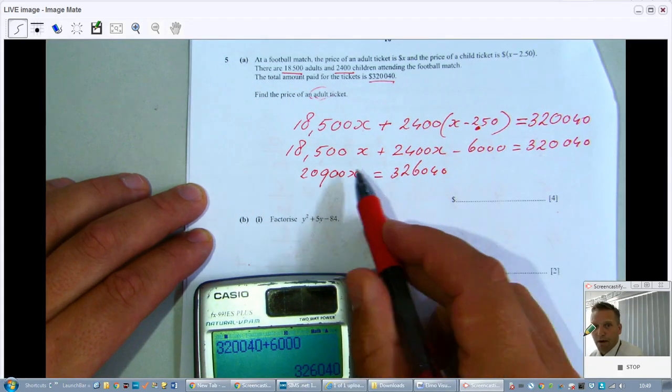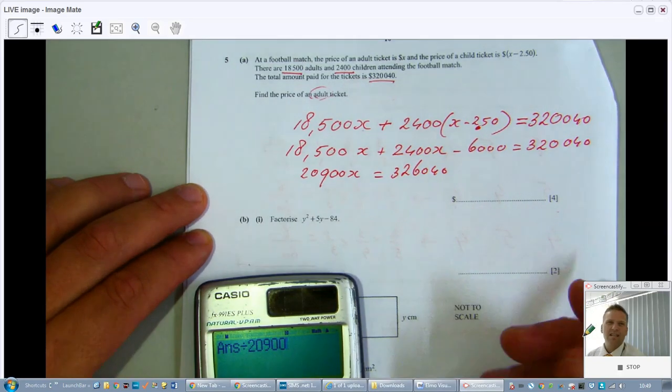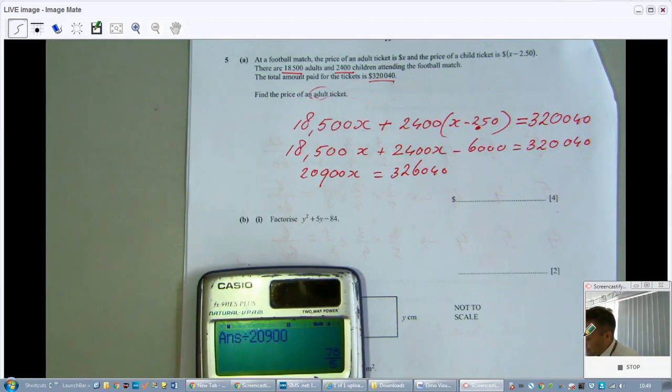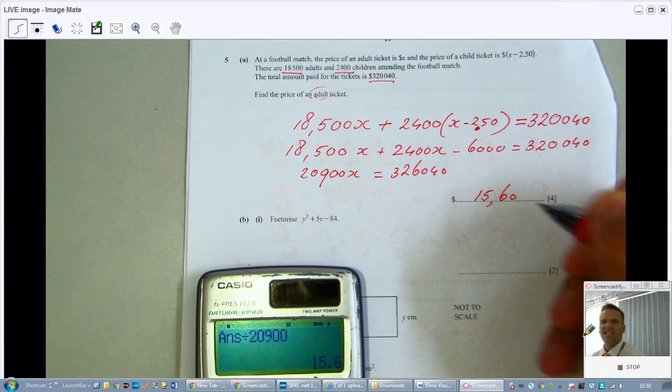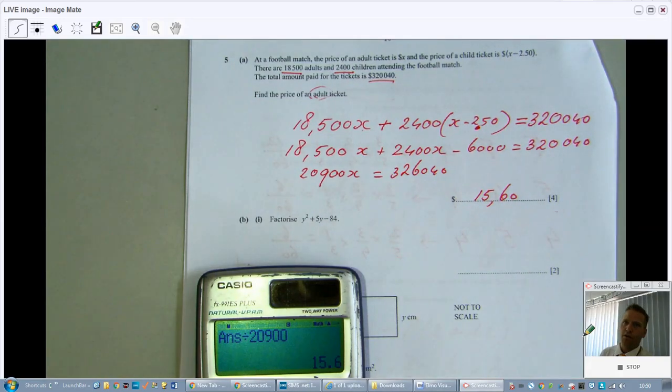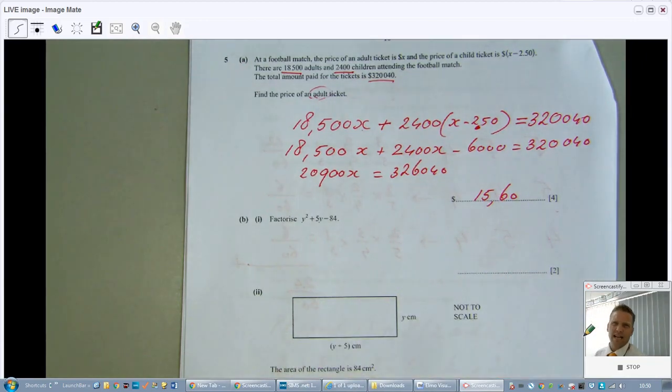Then I divide that number by 20,900. And keep in the back of your mind, so that's going to be the value of X. And we're talking about a ticket for a football game, which is dear, but $15.60 sounds quite reasonable. It shouldn't be like 12,000 or something because that would be rather expensive for a football ticket. Two decimal places because it's money, the cents. If you say 15.6, that's fine.